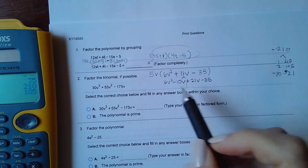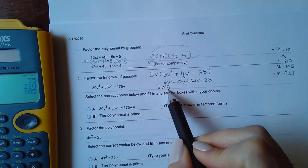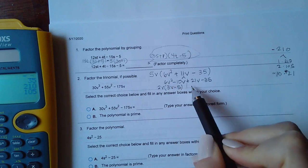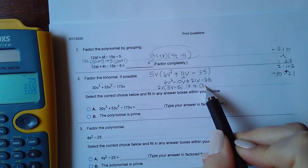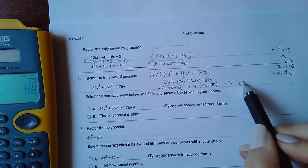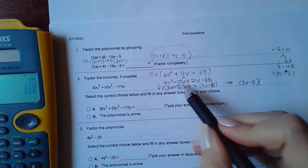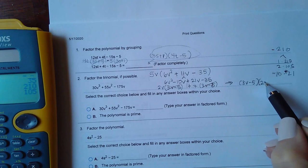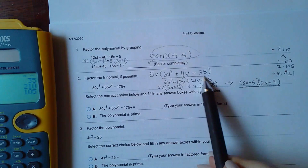I can chop that in half. This side can be divided by 2 and a v which will leave me with 3v minus 5. Bring down my plus sign. This side could be divided by 7 leaving me with 3v minus 5. Then they have this 3v minus 5 in common and if I took that out I would end up with the 2v plus 7.